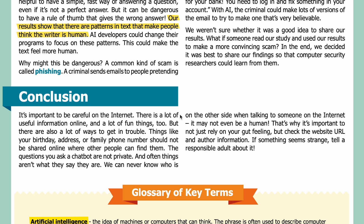Conclusion: It's important to be careful on the internet. There's a lot of useful information online and a lot of fun things too, but there are also a lot of ways to get in trouble. Things like your birthday, address, or family phone number should not be shared online. The questions you ask a chatbot are not private, and often things aren't what they say they are. We can never know who is on the other side when talking to someone on the internet — it may not even be a human. That's why it's important to not just rely on your gut feeling, but check the website URL and author information. If something seems strange, tell a responsible adult about it.